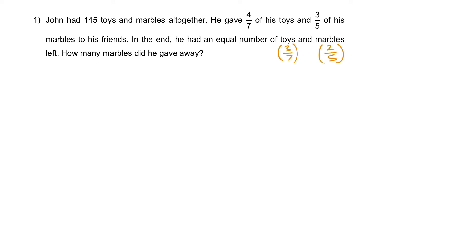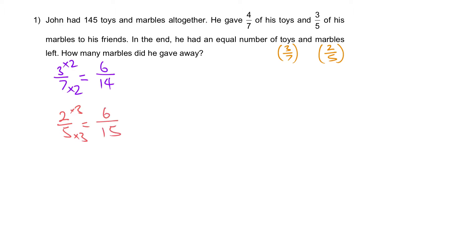Step one: make their numerators the same. For 3/7, the common multiple of 3 and 2 is 6, so we times by 2 to get 6/14. For 2/5, we times by 3 to get the equivalent fraction 6/15.